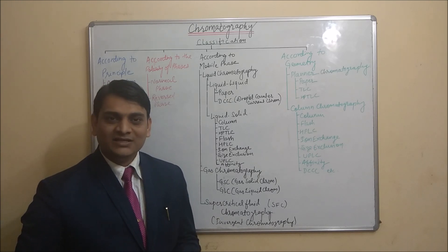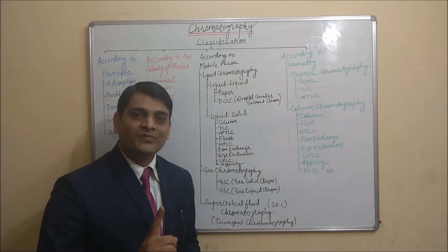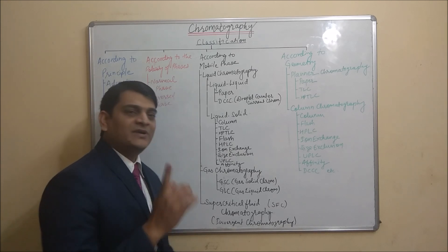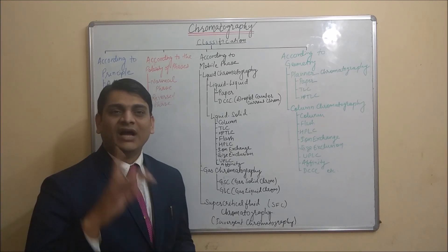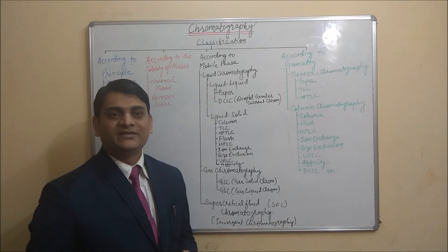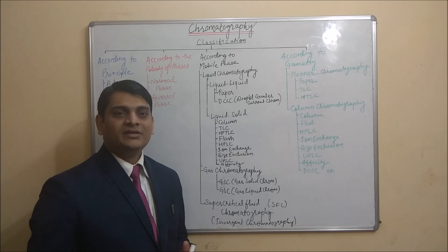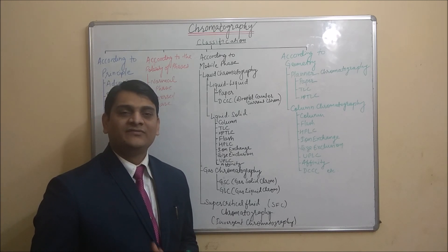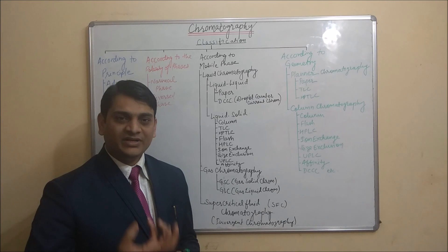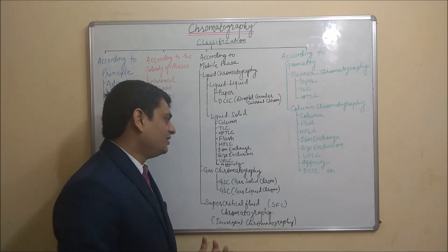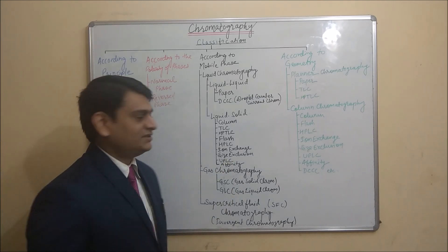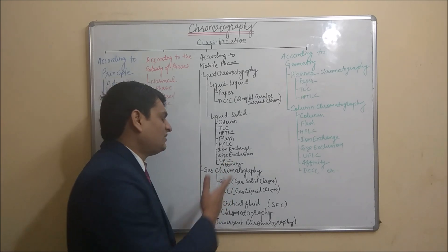HPLC (high performance liquid chromatography) uses high pressure of 1000 to 4000 psi, with a very small particle size of the stationary phase, resulting in better separation. It is a type of column chromatography.